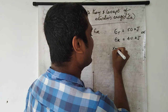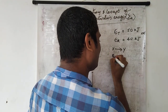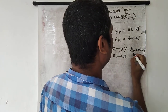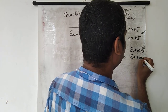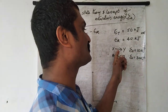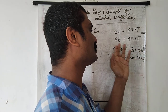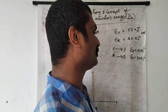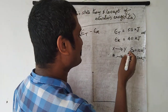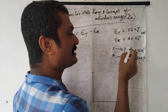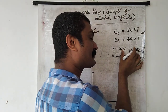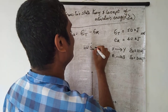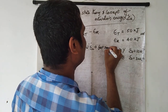We can consider two general reactions: the first one, X gives Y, and the second one, A gives B. In the first case, suppose the activation energy is 10 kilojoules; in the second case, the activation energy is 30 kilojoules. In the first case, we have to supply only 10 kilojoules of extra energy. This reaction proceeds at a high rate — that means low activation energy leads to fast reactions.